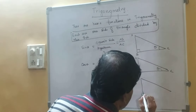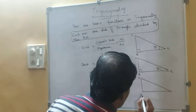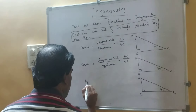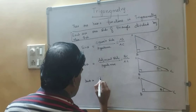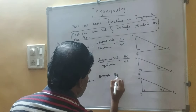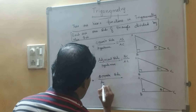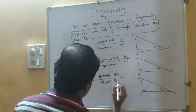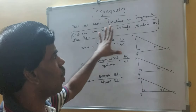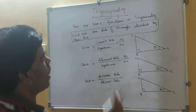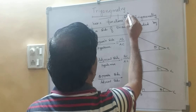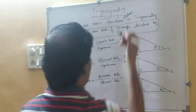The third possibility: tan theta equals opposite side upon adjacent side. These are the three basic trigonometrical ratios, also called trigonometric functions.